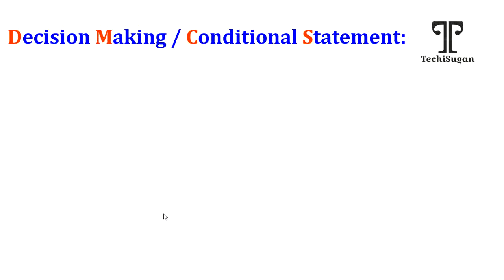Now we will move on to the different types of decision-making statements. There are different types: if, if-else, and elif. These are the different types of decision-making statements, and we will go through them one by one.